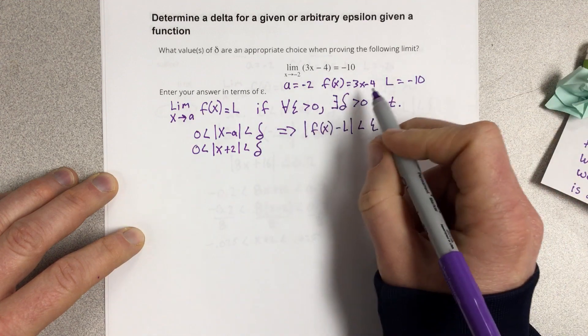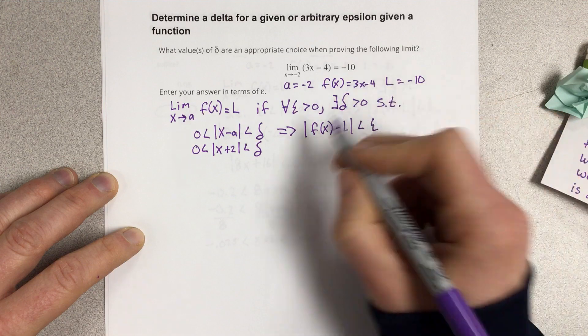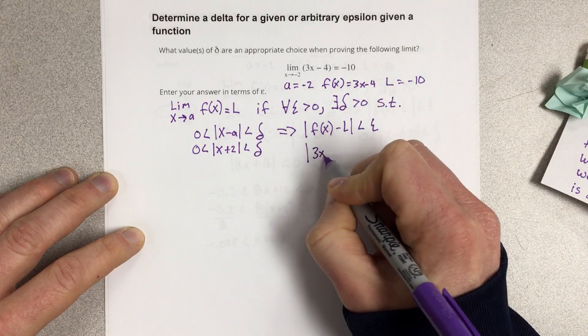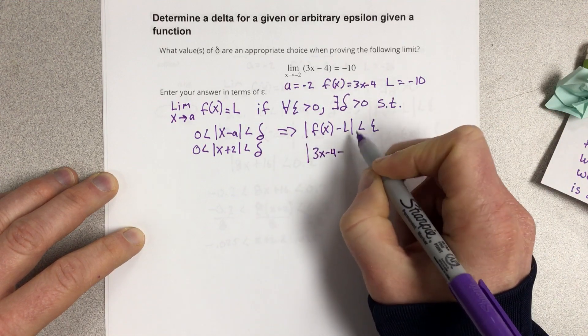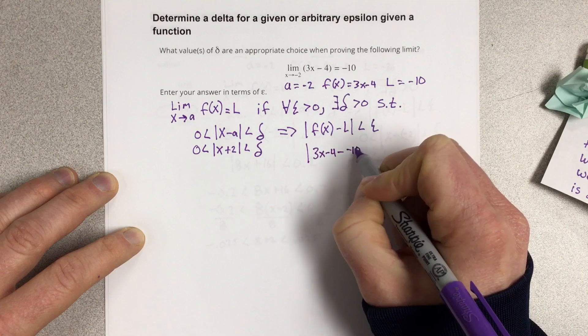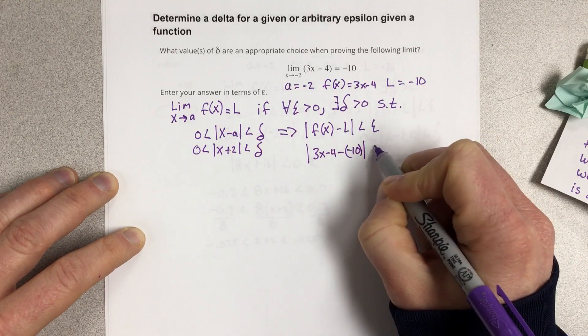So we're going to go ahead and plug in 3x minus 4, so we have absolute value of 3x minus 4 minus the limit which is negative 10 is less than epsilon.